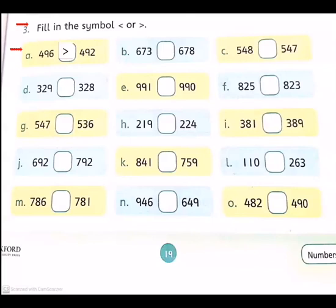And the part B. The first number is 673 and the other number is 678. So first we will check. Both are 600, both are 70. The first number is 73 and the other number is 78. Which is bigger? Yes, 78 because 8 is greater than 3. So the crocodile will eat 678.